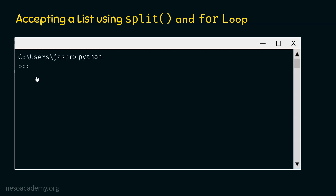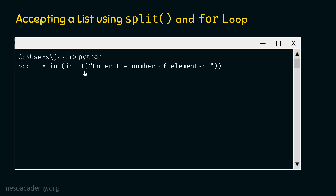Let's first receive the number of elements from the user. Let's type this command: n equal to int input enter the number of elements. With this command, we can receive the number of elements from the user. The input function receives input from the user and returns it as a string, so typecasting to int is needed. Eventually, n will point to an integer value received from the user. Let's hit enter — we get the prompt 'enter the number of elements'. Let's type 4, so n will now point to value 4.